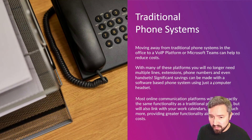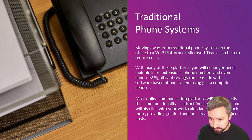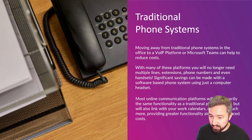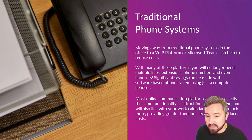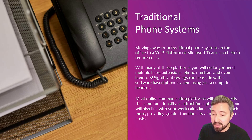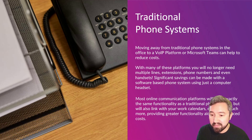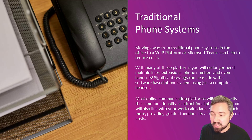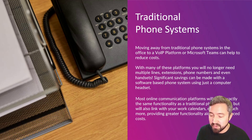Traditional phone systems — a lot of people will be in long-term contracts with these, but you can definitely look into moving to a VoIP platform, or something like Microsoft Teams, to help reduce costs. With many of these platforms, you no longer need multiple lines, extensions, phone numbers, and even handsets. Significant savings can be made on a software-based phone system just using a computer headset, and users can use just their laptop or desktop PC to make all of their calls. A lot of them have mobile phone apps as well, so you can take them on the go — your users don't have to be in a fixed location to answer the phone. For instance, Teams — I can answer Teams on my mobile, or on my laptop or desktop, using either my mobile phone or a headset, saving on those costs for multiple devices, hardware, software, and phones.